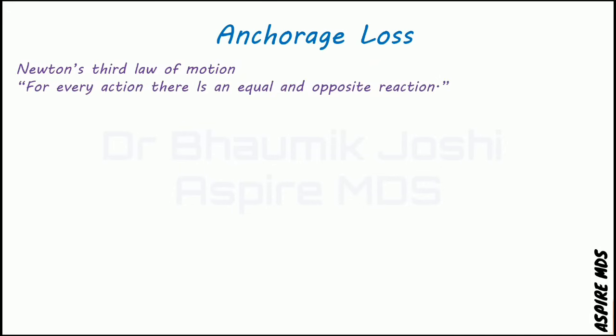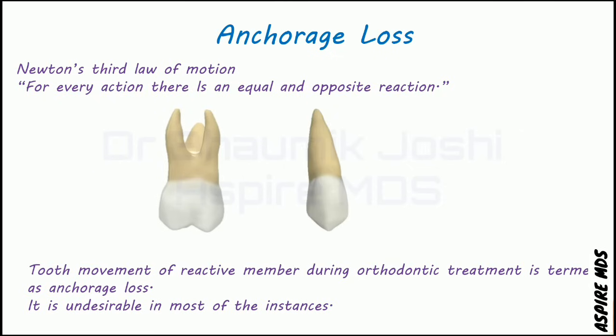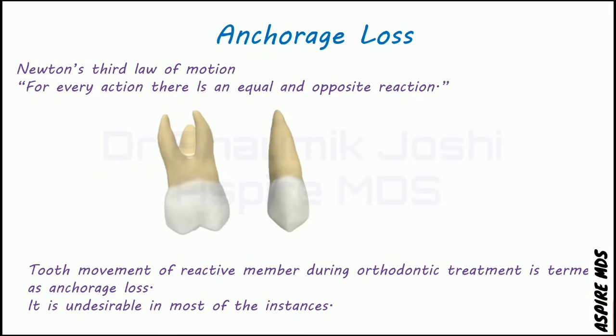The next phenomenon is anchorage loss. Newton's third law of motion states that for every action there is an equal and opposite reaction — when you cause tooth movement using anchorage, there will be some movement in the anchor tooth as well. Although undesirable, it is bound to happen. This is known as anchorage loss. For example, when using the molar as support to retract the canine, you will see some movement in the anchor molar as well.